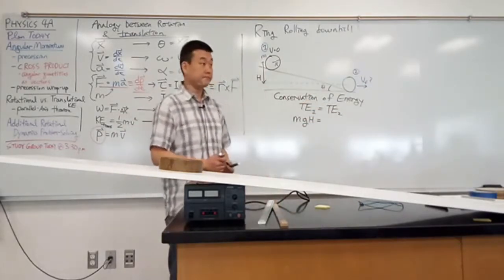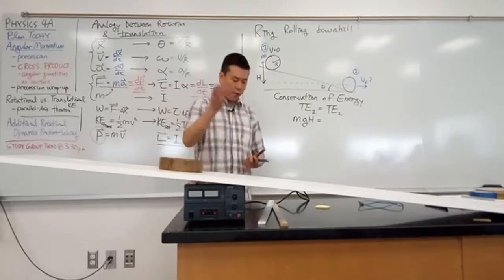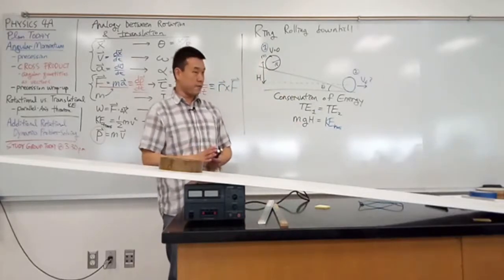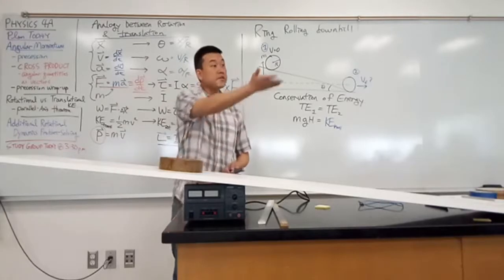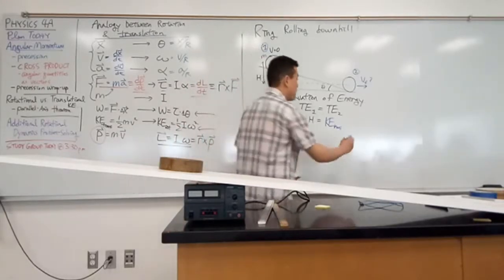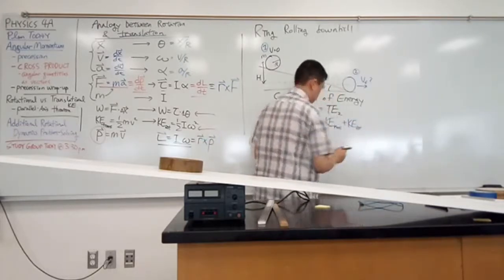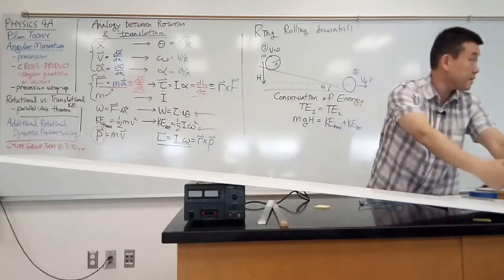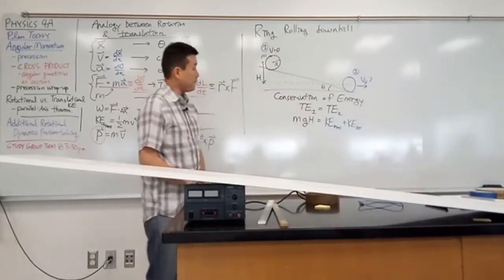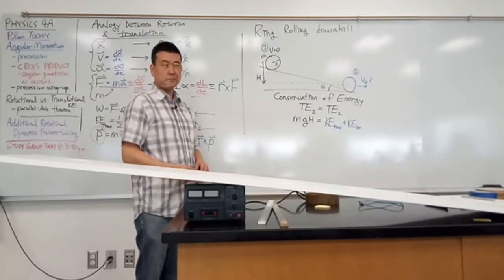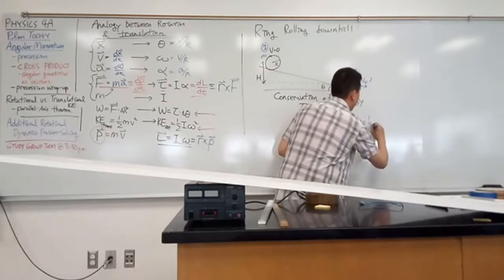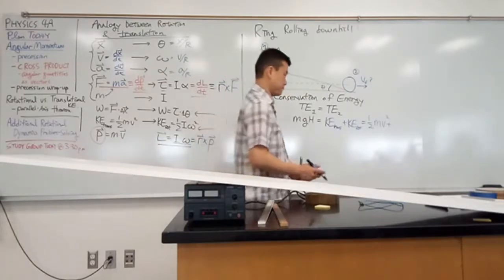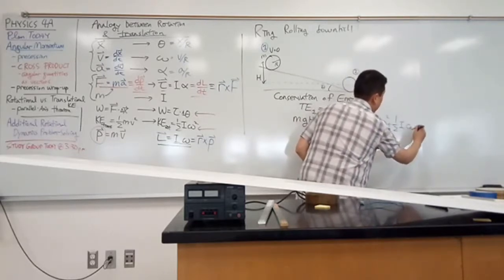What about total energy at point two? Let's break down the forms of energy. You're going to have translational kinetic energy. Is that all? It's also going to have rotational kinetic energy. When the ring rolls down the hill, by the time it reaches the bottom, it has translational motion — it has velocity — and it's rotating. So the right-hand side is one-half mv² plus one-half I omega².